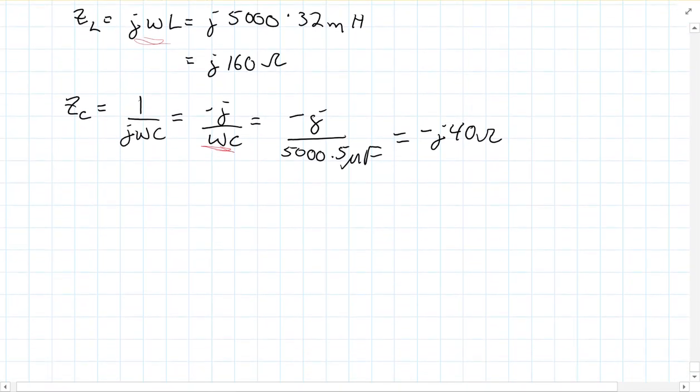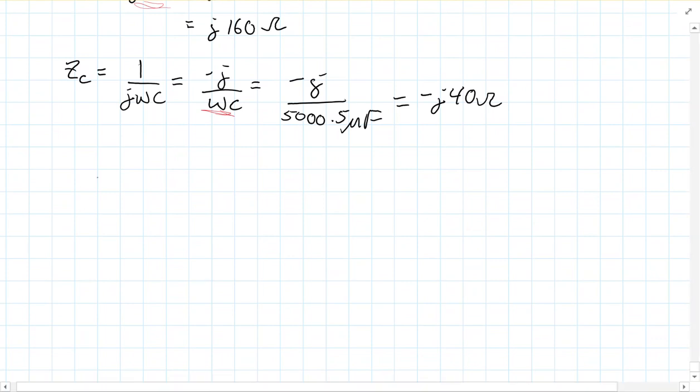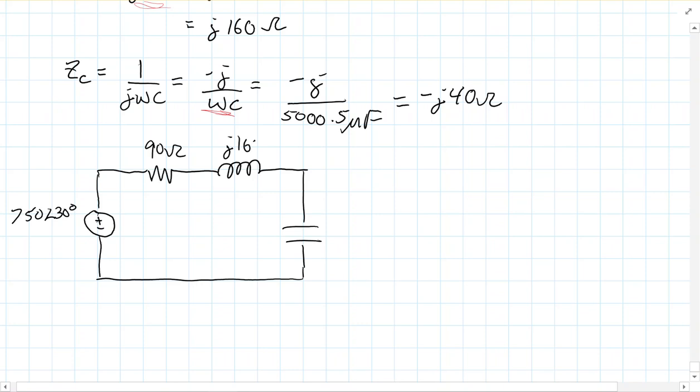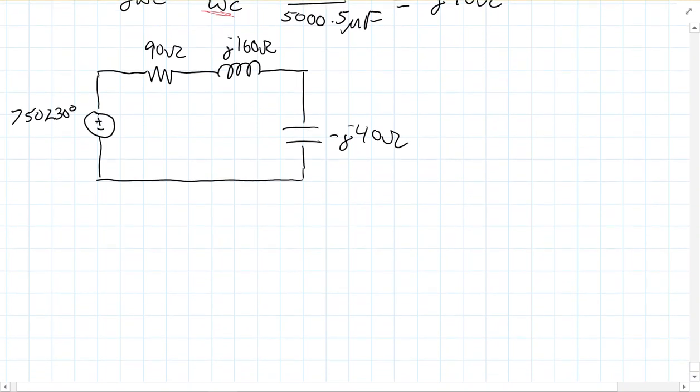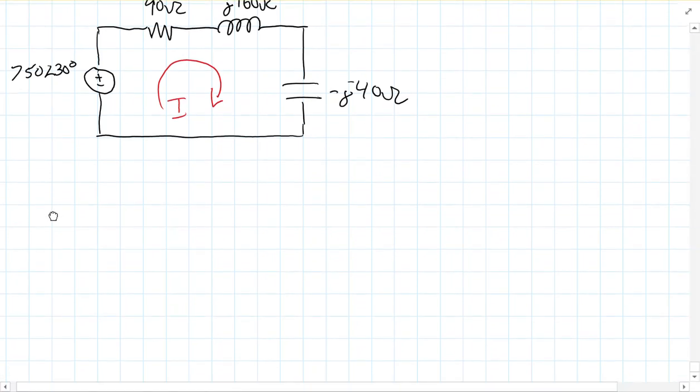Alright, so what do we have here? Well, I'm just going to redraw the circuit as opposed to scrolling back up and down here. Normally what I would do is just relabel my circuit as opposed to redrawing it. Okay, so this is 750 at an angle of 30 degrees. This is now still a 90 ohm resistor. This is J 160 ohms. And this is minus J 40 ohms. Now I'm going to take this kind of a little one step at a time. You probably can start seeing how we're going to be able to just use all of our old circuit analysis techniques to solve this. But I'm going to go ahead and write my loop, because again, I'm trying to find the current.